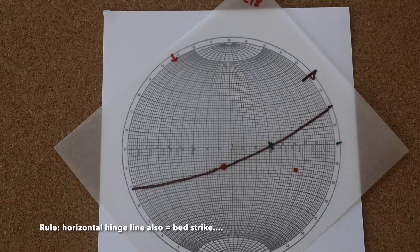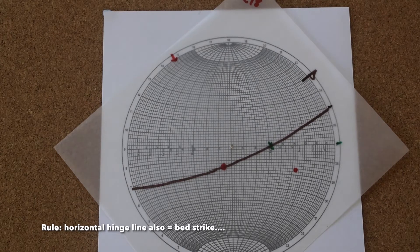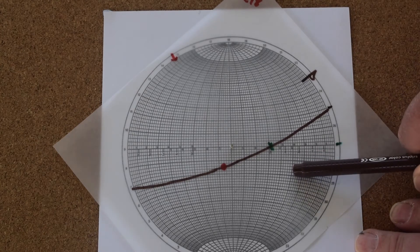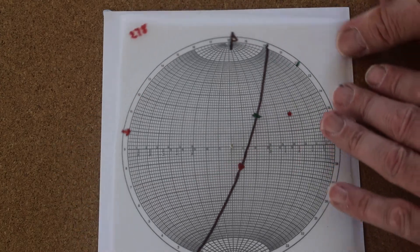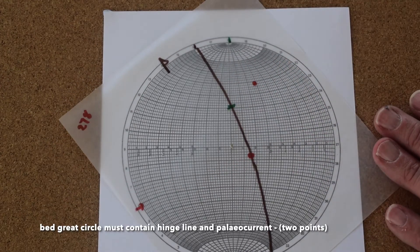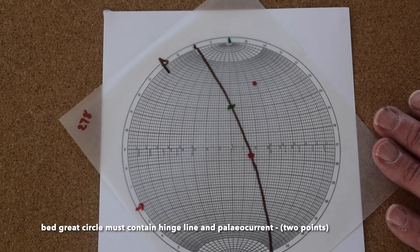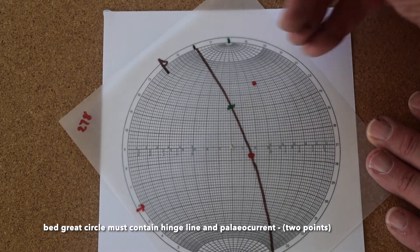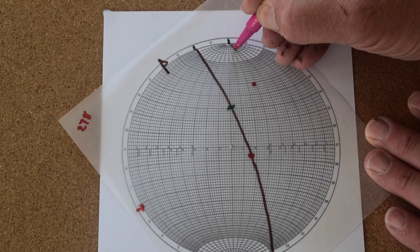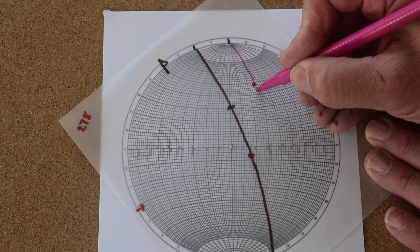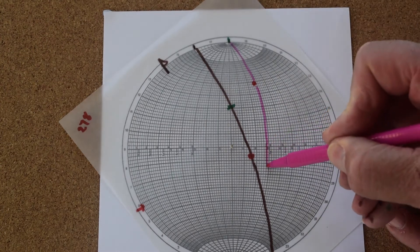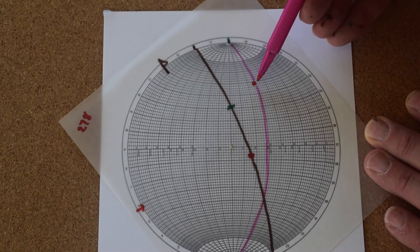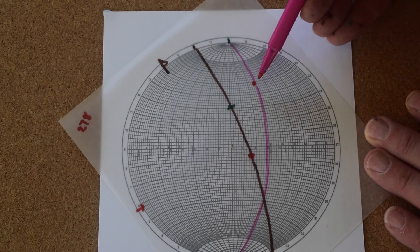Now once the fold is unplunged, the hinge line is horizontal, therefore the bedding strike is the same as the hinge of the fold. So this is the strike of our bedding. This point is on the bedding, so we can simply draw the bedding trace in now as a reconstruction. I'll just change the color and draw this in in pink. This is our reconstructed bedding orientation, having unplunged the fold, with its paleocurrent that's sitting on our yet to be untilted but unplunged structure.